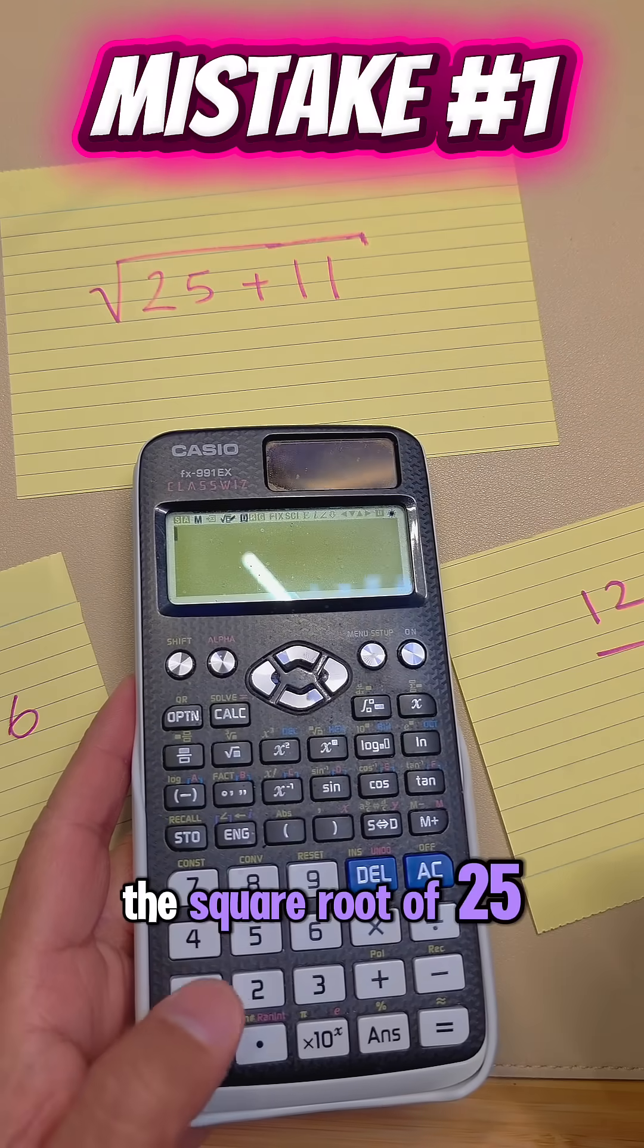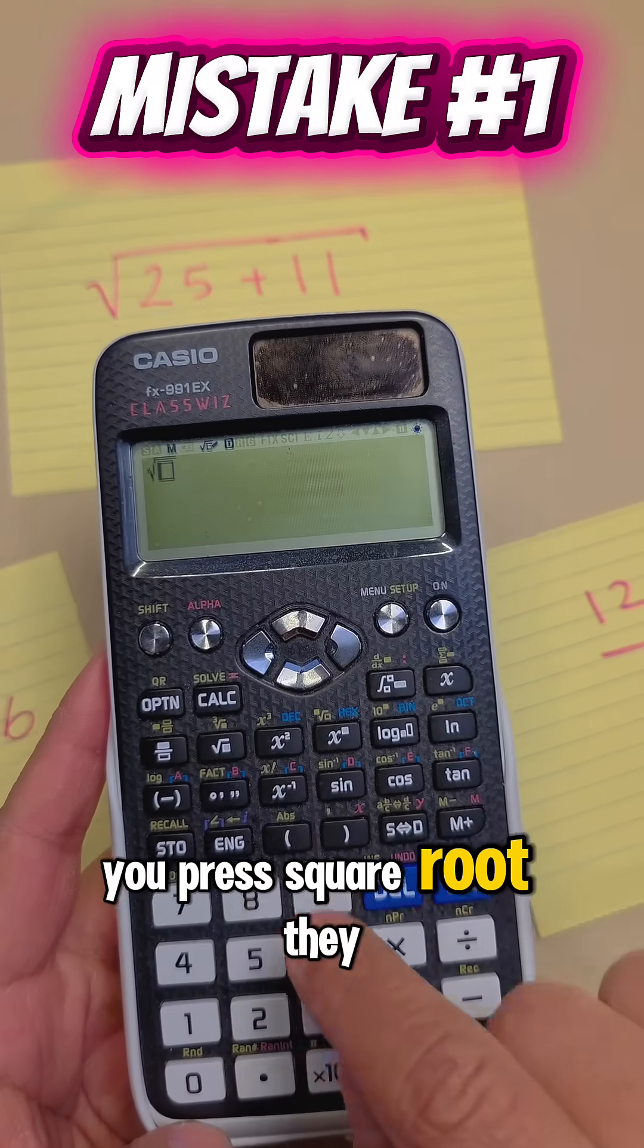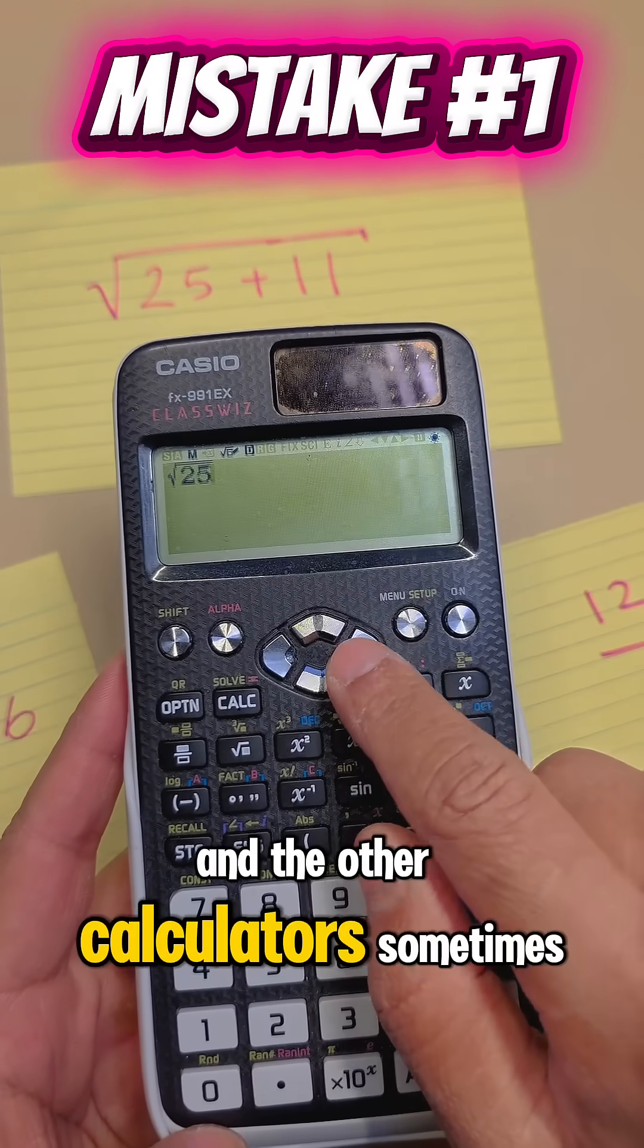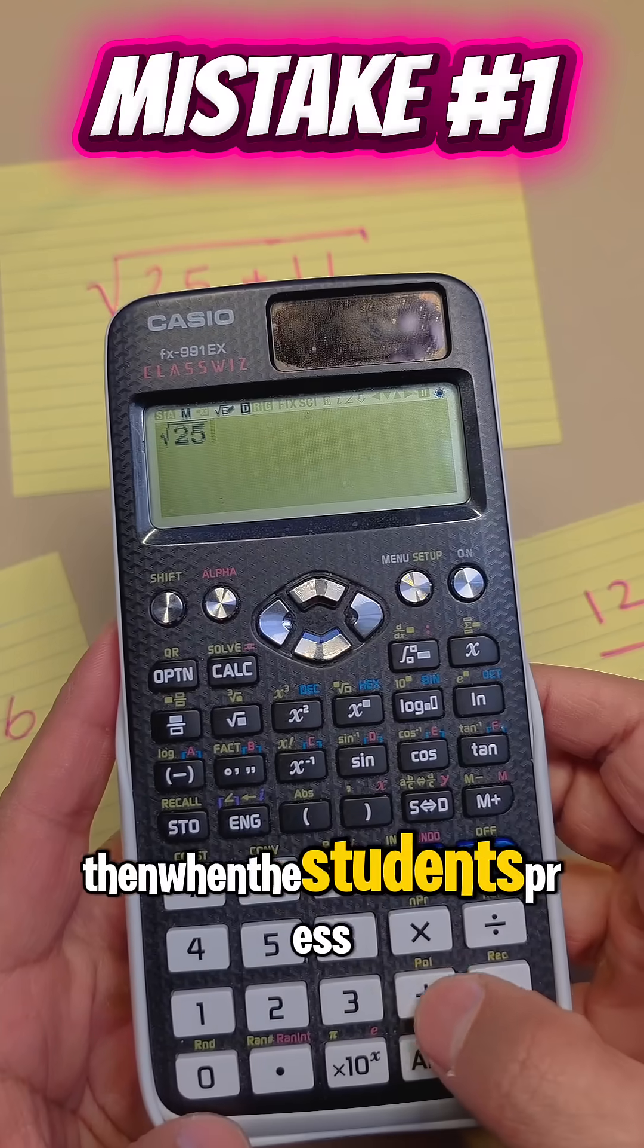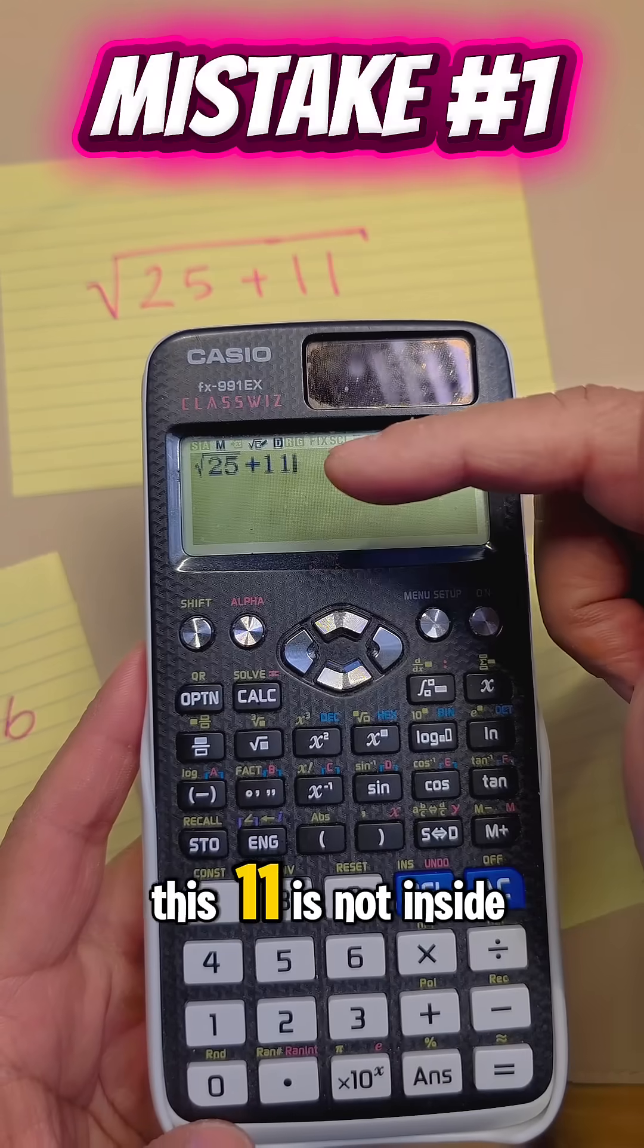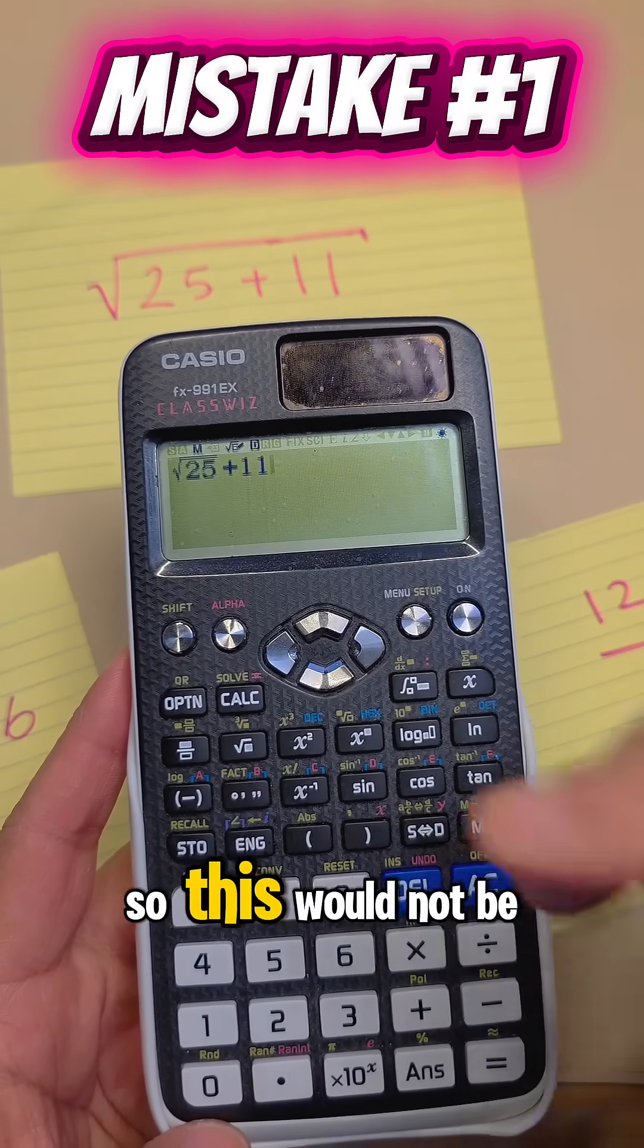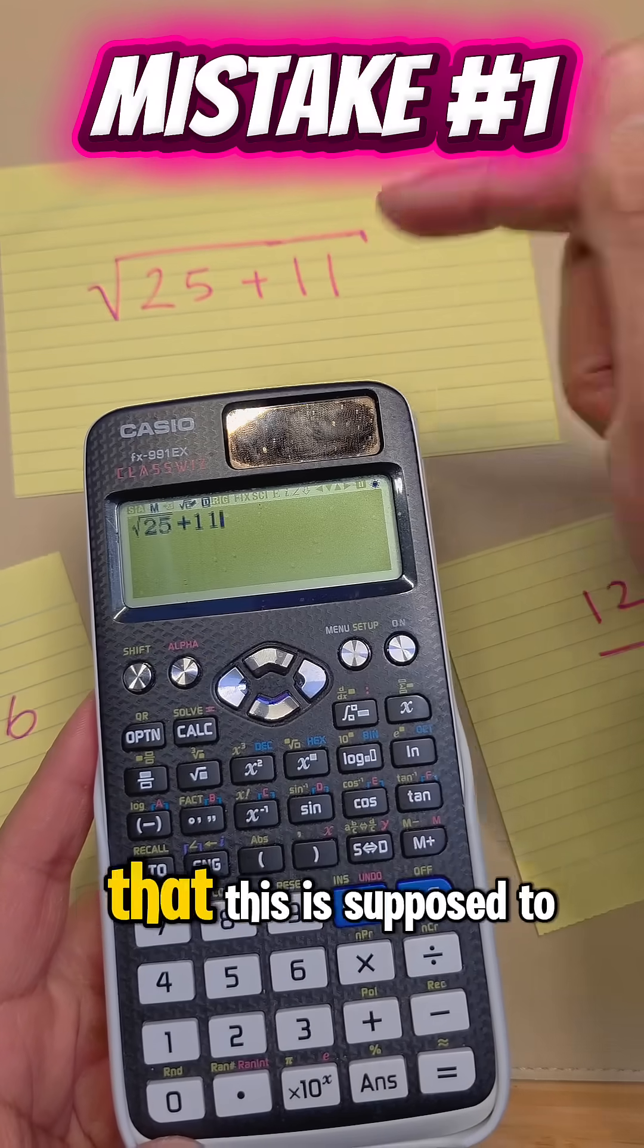So take a look at this one here, the square root of 25 plus 11. They press square root, they do 25, and the other calculators sometimes go out. So then when the students press plus 11, can you see here that this 11 is not inside that square root? So this will not be correct, not give you the answer that this is supposed to give.